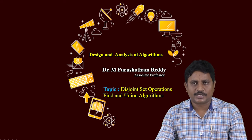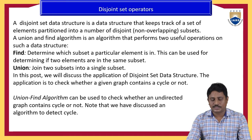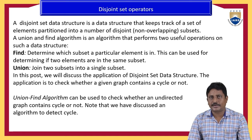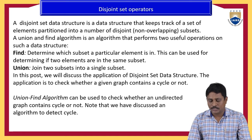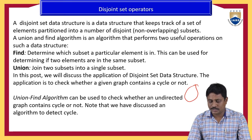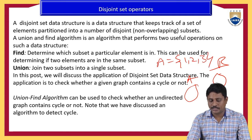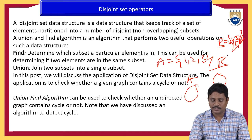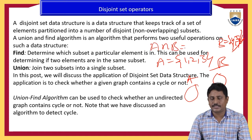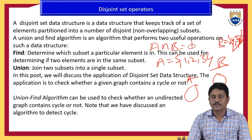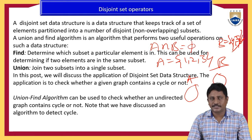In this disjoint set operations, I mainly discuss about find and union algorithms. Disjoint set means suppose you take two sets: A is one set, B is another set. Suppose A consists of elements one, two, three and B consists of elements four, five, six. A intersection B — the common elements of A and B — don't have any common elements, so A intersection B is equal to empty. Now we say that A and B are disjoint sets.